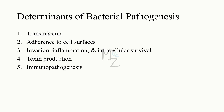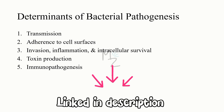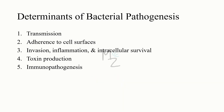The fourth determinant is toxin production. Exotoxins are polypeptides secreted by certain bacteria that alter specific cell functions, resulting in symptoms of disease. They are produced by both gram-positive and gram-negative bacteria. Endotoxins are found only in gram-negative bacteria; they are lipopolysaccharides and are not secreted by bacteria. The last determinant is immunopathogenesis. In certain diseases such as rheumatic fever and acute glomerulonephritis, it is not the organism itself but the immune response that causes the symptoms. For example, in rheumatic fever, antibodies formed against the M protein of Streptococcus pyogenes cross-react with joint, heart, and brain tissue, causing inflammation resulting in arthritis, carditis, and chorea.